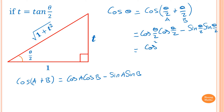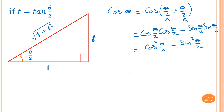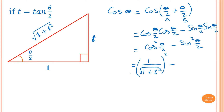cos²(θ/2): since cos is adjacent over hypotenuse, cos(θ/2) equals 1 over √(1+t²). We need to square that. Then minus sin²(θ/2), where sin is opposite over hypotenuse.